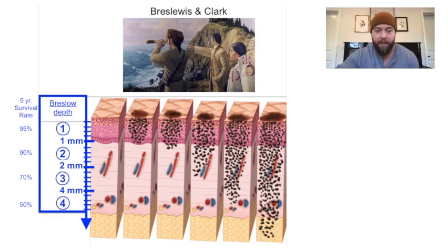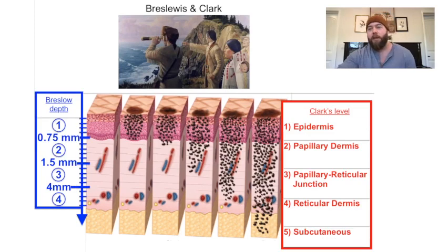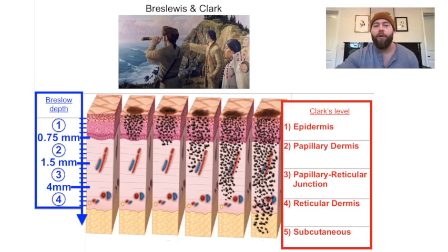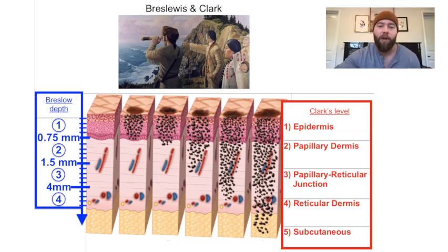Because you could be telling patients that they have a 50% survival rate based on some very out-of-date classification. But if you want to spend your time still memorizing this out-of-date information, this is the original Breslow depth and Clark levels. To remember that, I have twisted the name into 'Bres-Lewis and Clark,' with a picture of Lewis and Clark exploring the layers of the skin for melanoma.